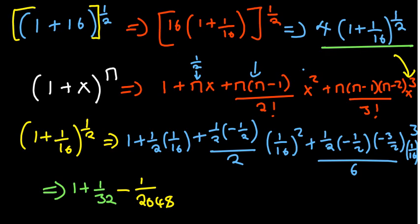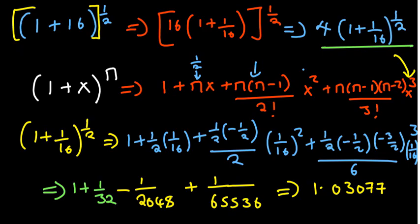That is negative 1/2048. And then the other part: negative 1/2 multiplied by 1/2 multiplied by negative 3/2 divided by 6 multiplied by 1/16³. So that is positive 1/65536. After adding all these numbers, the value that I am getting is 1.030776978.